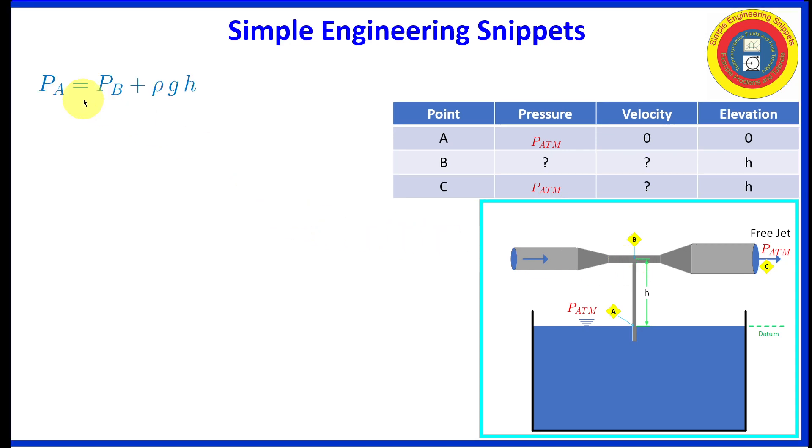All right, well, fluid statics tells us that the pressure at alpha, which again is inside the tube, is equal to the pressure at Bravo, which is the throat, plus the height, the pressure due to the height of the water, rho GH. We already know also that pressure at alpha is atmospheric. So we can solve these equations for the pressure at Bravo, and it's equal to the atmospheric pressure minus rho GH.